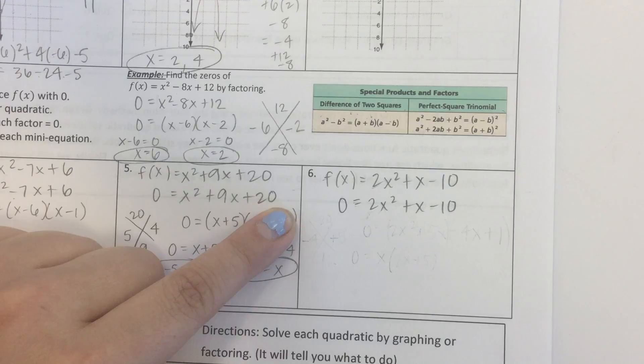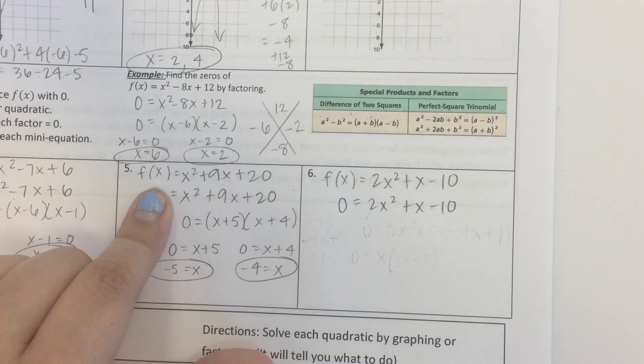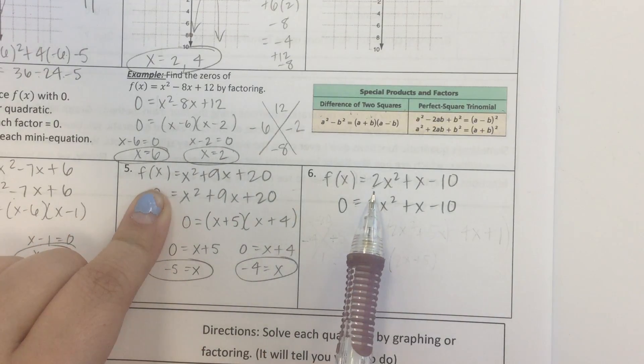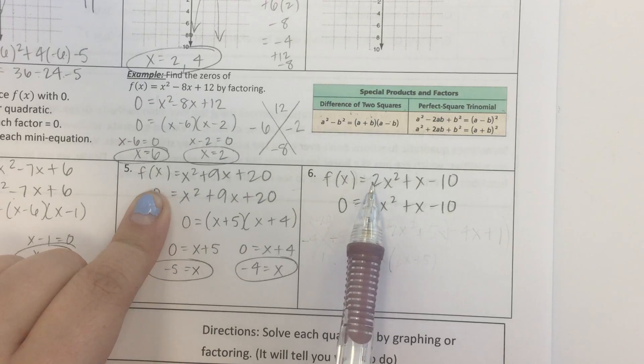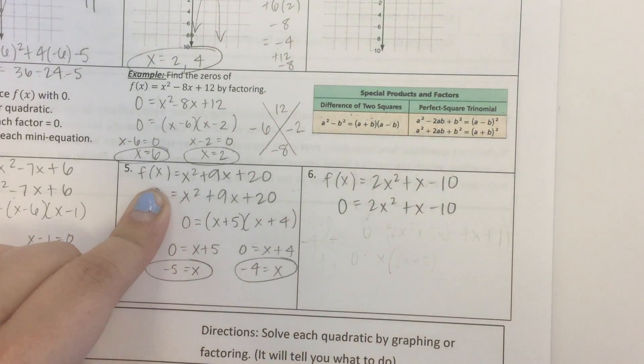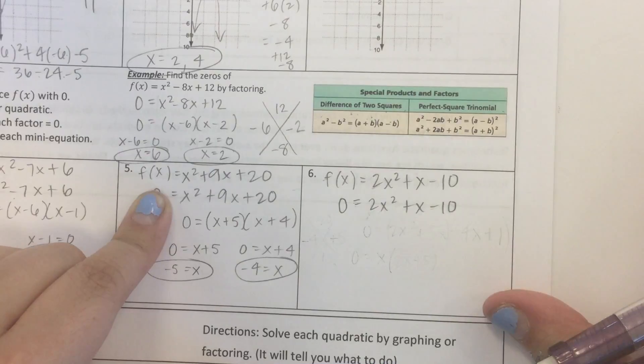Now this one looks a little bit different than the ones that we've done over here. Our leading coefficient is no longer 1, it's 2. So that kind of throws a wrench into our easy way of factoring, but it's only one extra step we have to do.